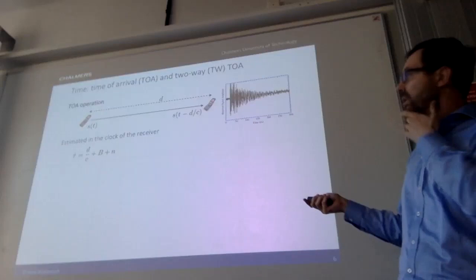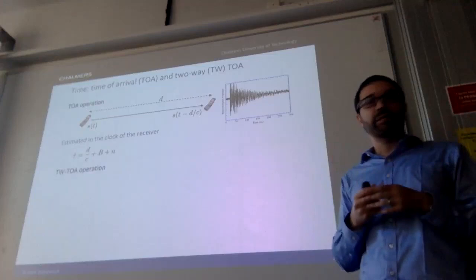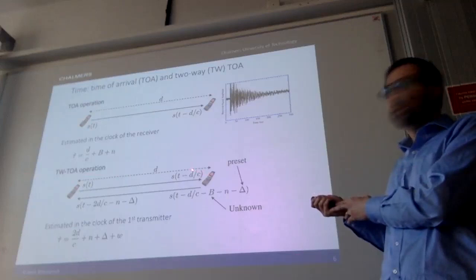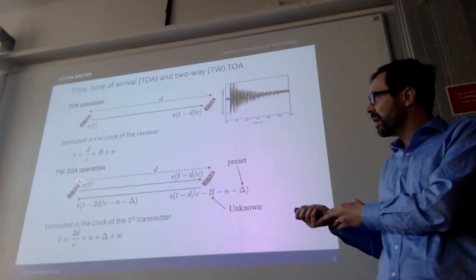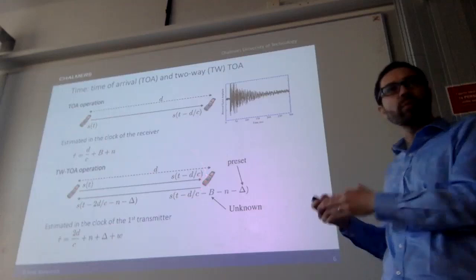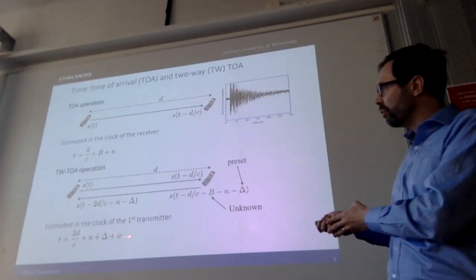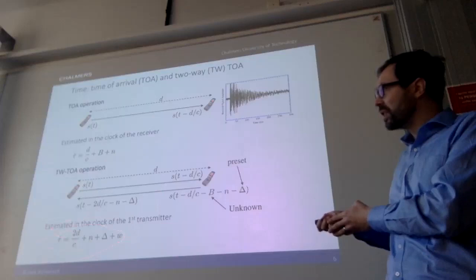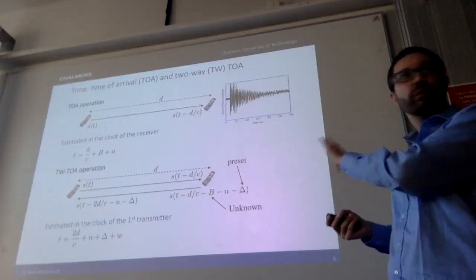This is called time of arrival estimation. An extension is two-way time of arrival: a transmitter sends a signal to the receiver, the receiver echoes it back, and the original transmitter estimates the round-trip time of arrival. This measurement equals two times the distance plus a known fixed offset — because the receiver transmits back after a known delay, say one millisecond — plus two sources of noise. So you get a measurement of distance without any clock bias. This is called two-way time of arrival.